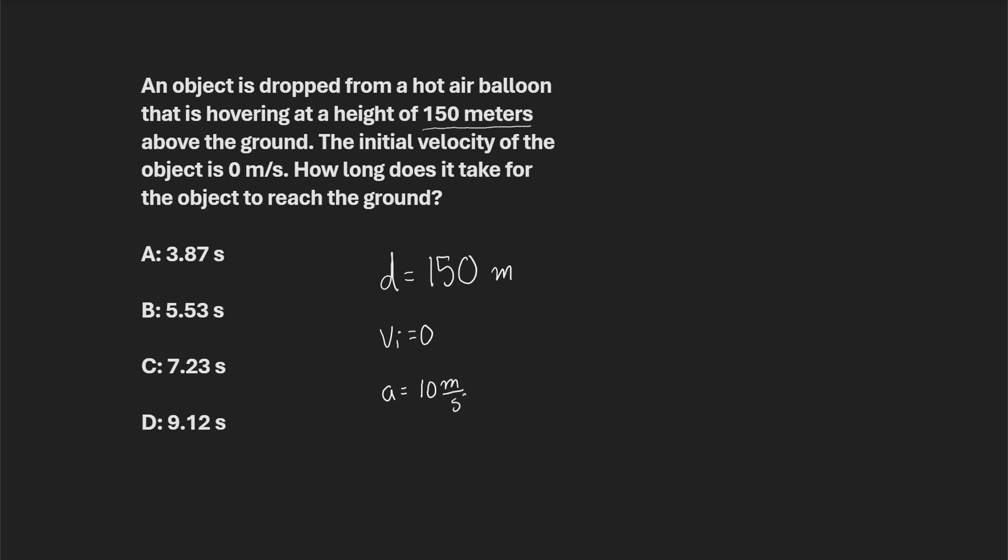Meters per second squared. Again, on the MCAT, we round that to 10. Now, so we've got distance, we've got initial velocity, we've got acceleration, and what do we need? We need how long. That's time, so time equals question mark. That's t. So these are the variables that we have, and then this is the variable that we need.